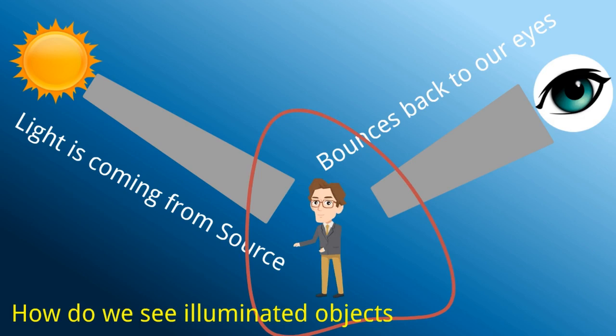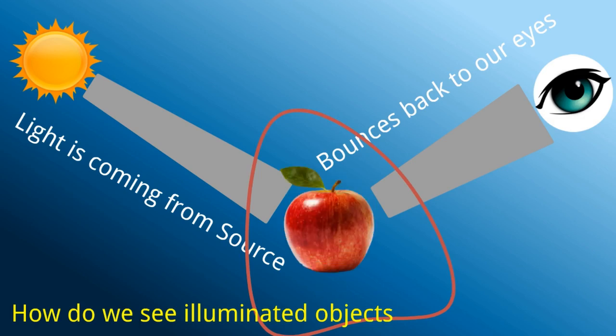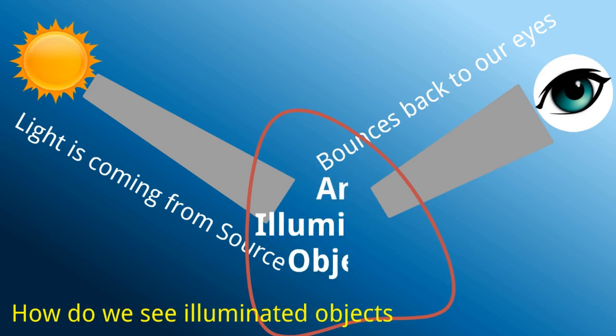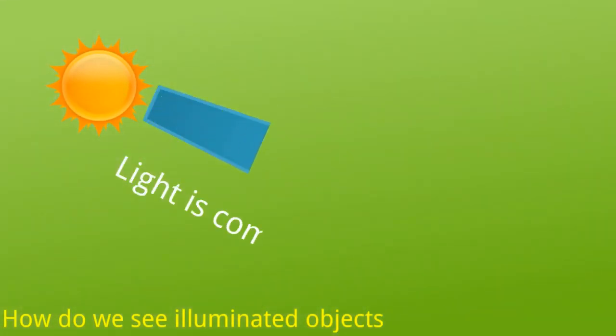If you take a football, it's the same thing. You can also take an apple — light is falling on the apple and it bounces back to our eyes, and we can see the apple. In that way, we see all illuminated objects with the help of light from luminous objects.